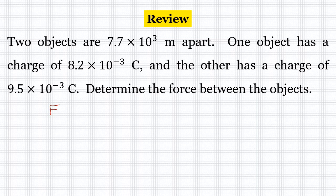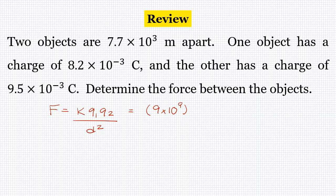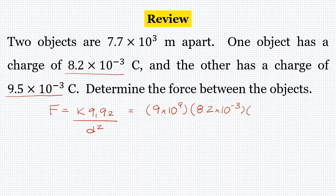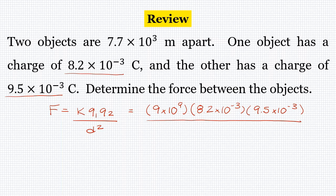Our equation is F equals K times Q1 times Q2 over the distance squared. K is always 9 times 10 to the 9th — that's a constant value. Q1 and Q2 can be either charge, so I'll label 8.2 times 10 to the negative 3rd as Q1 and 9.5 times 10 to the negative 3rd as Q2. The distance from the question is 7.7 times 10 to the 3rd, and we're going to square that number.